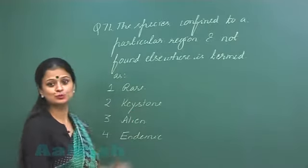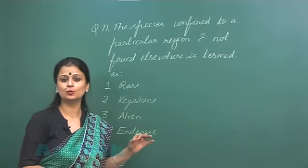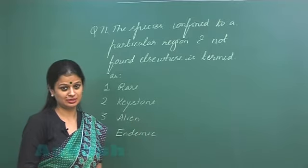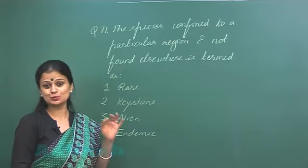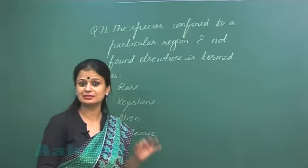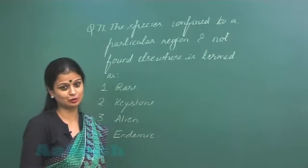Now keystone species. Keystone species are those which play critical role in maintaining the community structure. In the keystone species, their number is less, their abundance is less, but they play major role in maintaining the community structure.